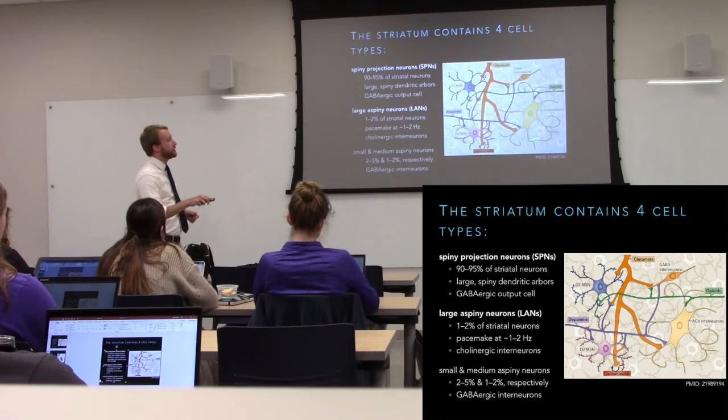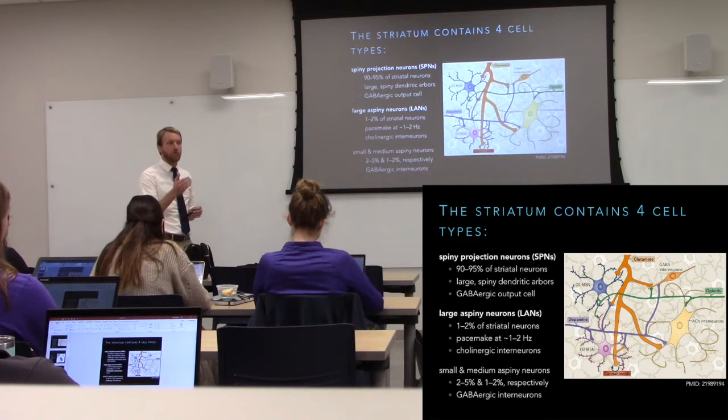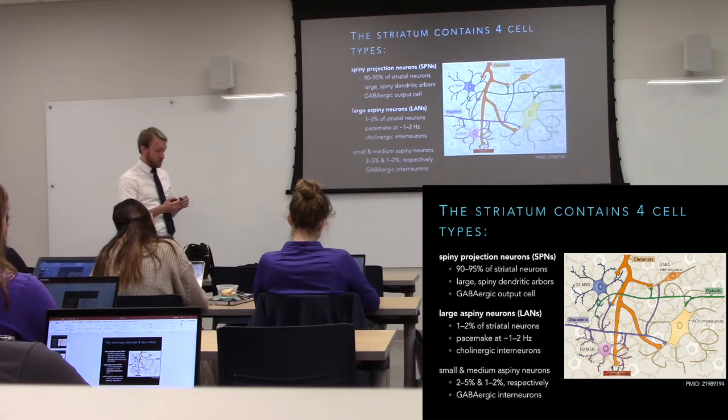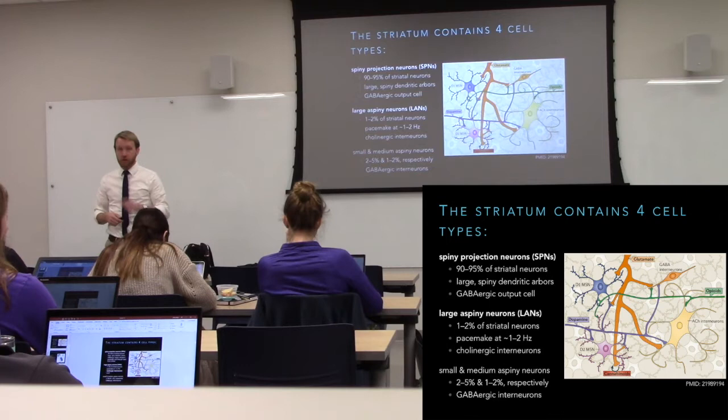We also have large aspiny neurons — these are the cholinergic interneurons. They're going to provide acetylcholine onto spiny projection neurons and determine whether they are more or less excitable depending on which type of muscarinic acetylcholine receptor they express — so not nicotinic in this case. We're going to have some that have M4 and some that have M1, so Gi and Gq — more on that later.